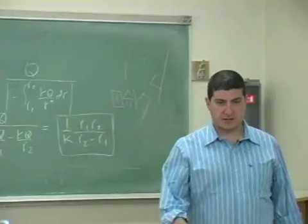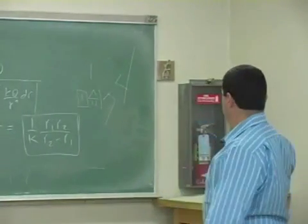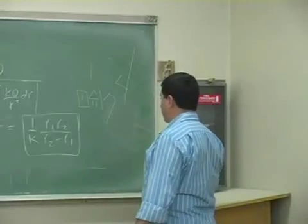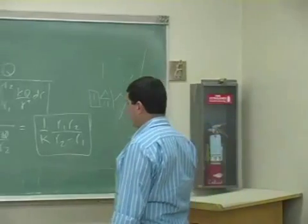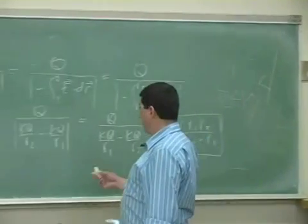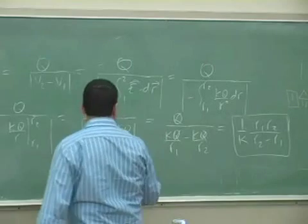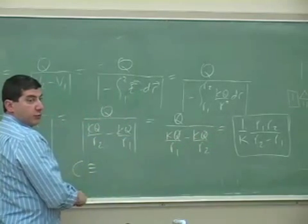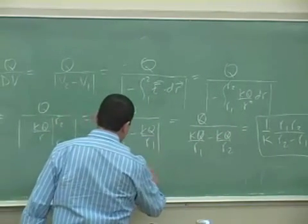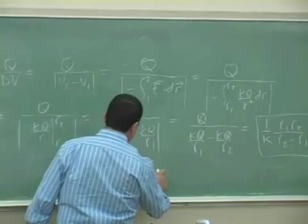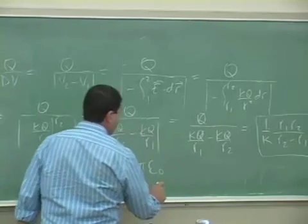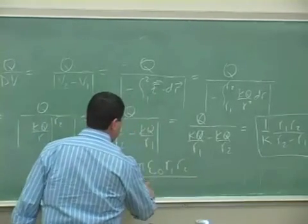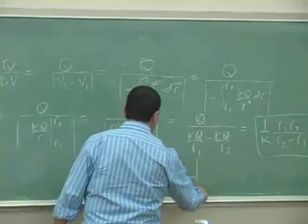That's it — that's the capacitance: 1 over K times R1 R2 over R2 minus R1. Or we can write it as, since 1 over K equals 4πε₀: C = 4πε₀ times R1 R2 over R2 minus R1.